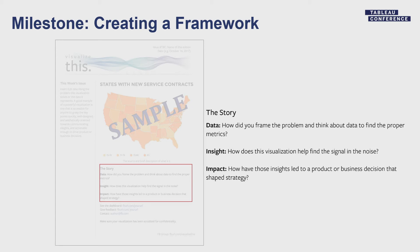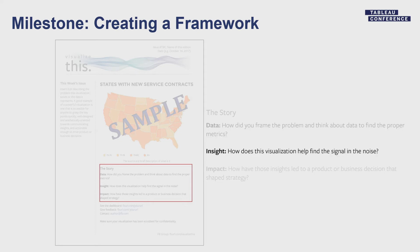This made me think back to early in my Facebook tenure when I took a two-week data camp — training for Facebook people to use data. One breakout session I loved was called Creating High Impact Figures. The presenter shared that people need a way to understand things quickly and visually, and he shared a three-pronged approach to telling a story with data. The three components are: first, the data — did you ask the right questions and frame the problem to find the proper metrics? Second, the insights — how does this data help you find signal in the noise? And finally, the most important part: how are you translating those insights into impact, changing some business strategy or decision? Without that, you really haven't done your job as an analyst.